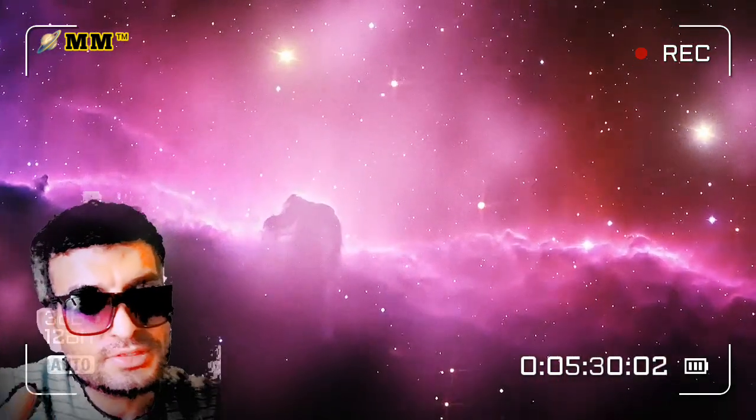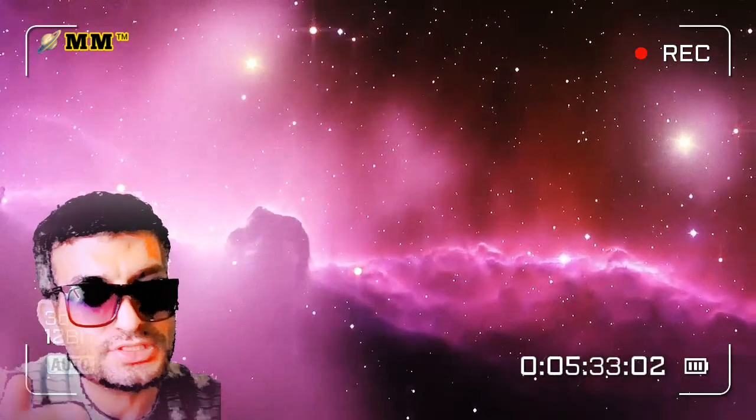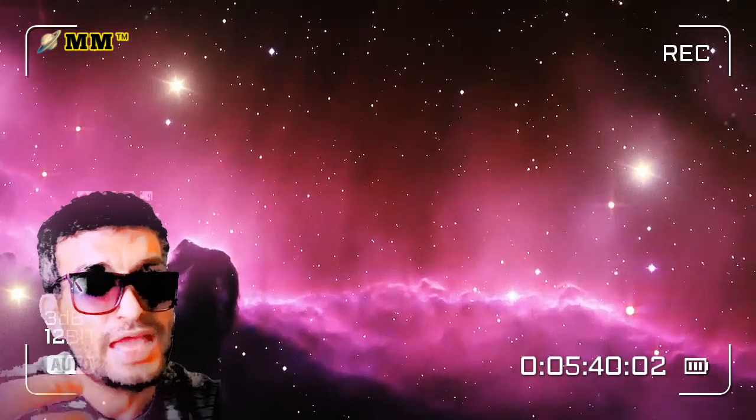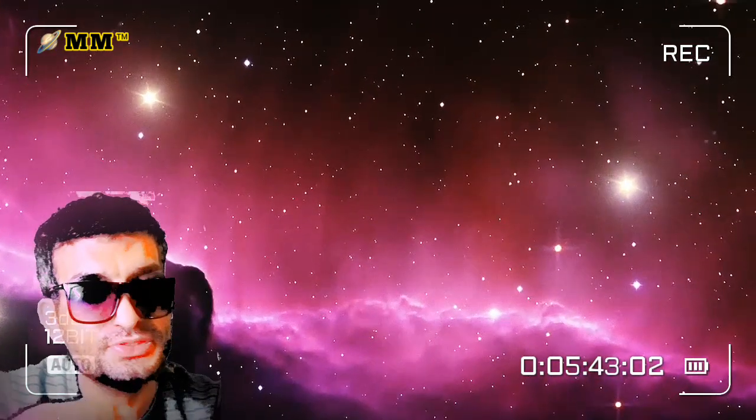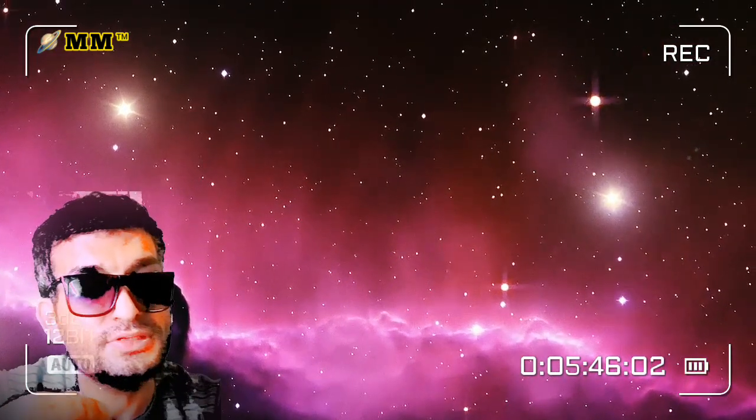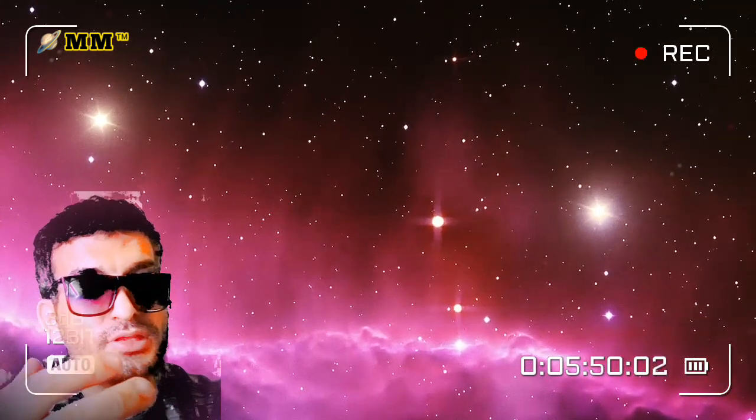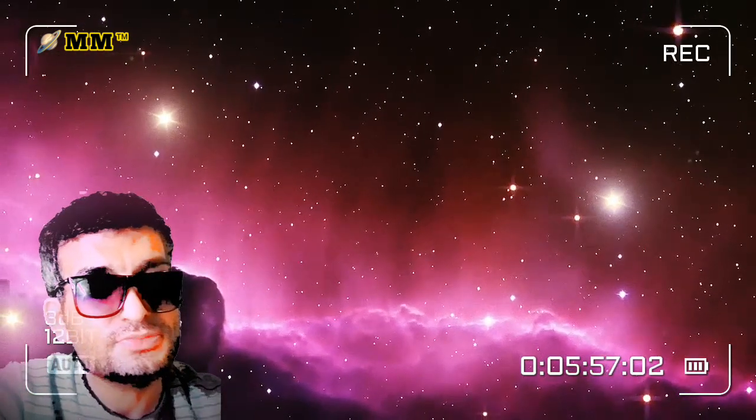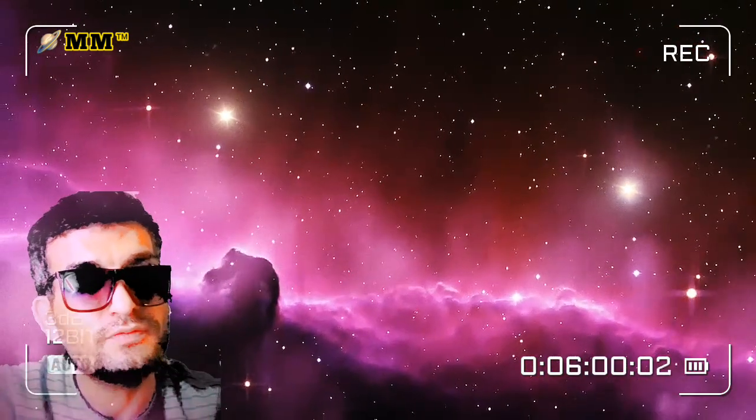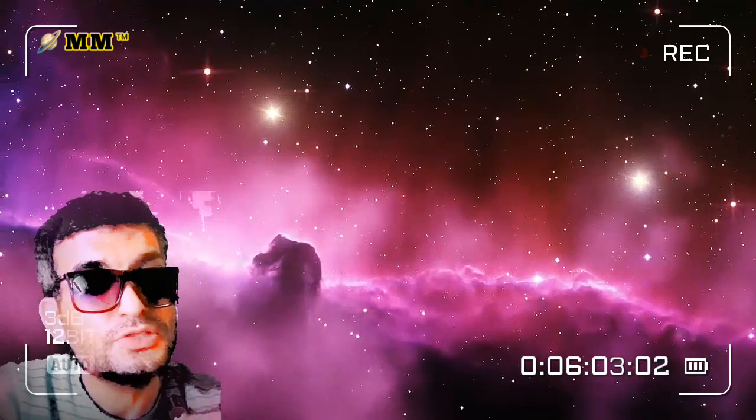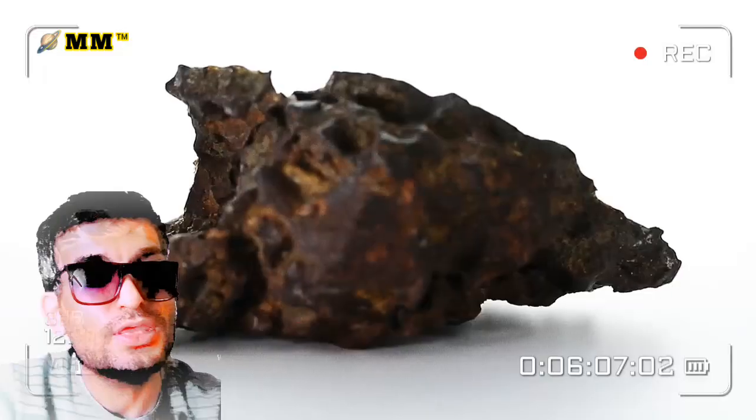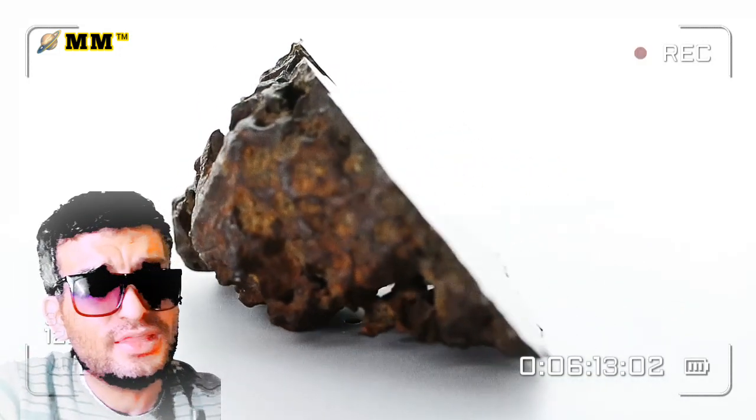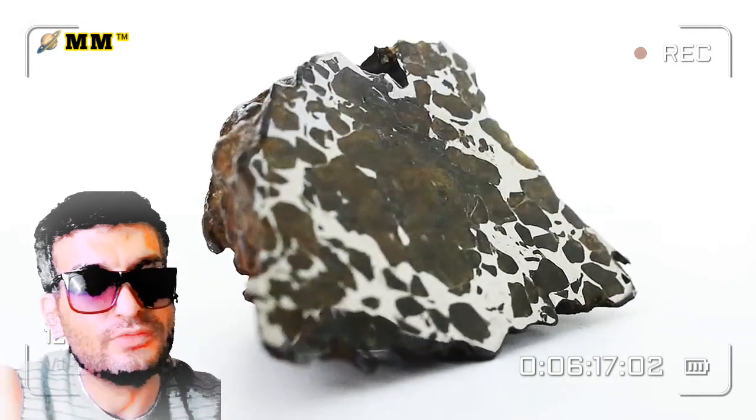Meteorites found in hot deserts sometimes have fusion crust that has weathered away. However, all meteorites contain certain isotopes, nuclides, that can only be produced by reactions with penetrating cosmic rays while outside Earth's atmosphere. The presence of cosmogenic nuclides is the ultimate test of whether or not a rock is a meteorite. All lunar meteorites that have been tested show evidence of cosmic ray exposure.